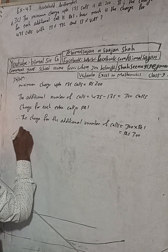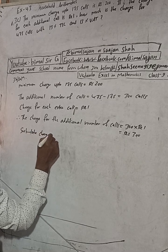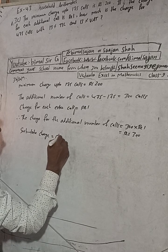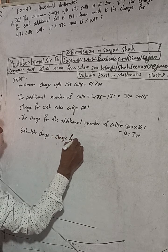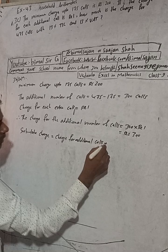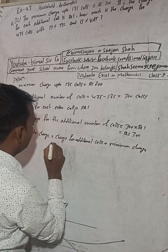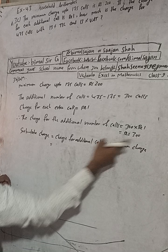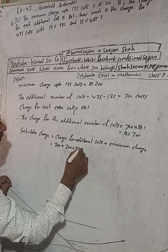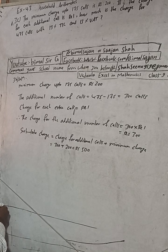So the total charge is equal to charge for additional calls plus minimum charge. Charge for additional calls is Rs.300 plus minimum charge Rs.200, so this is equal to Rs.500. The total charge is Rs.500.